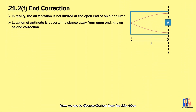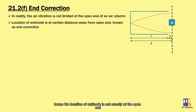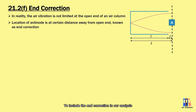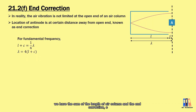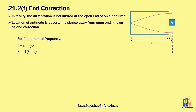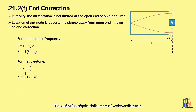Now let's discuss the end correction. In reality, the air vibration is not limited exactly at the end of an air column. The air near the open end is also vibrating, so the location of the antinode is not exactly at the open end but at a certain distance away from it. This extra distance is labeled as the end correction. To include the end correction in our analysis, we make a small adjustment at the first step: we add the end correction to the length of the air column. For example, for the fundamental frequency in the closed-end air column, the sum of the length L and the end correction c equals one quarter of the wavelength. For the first overtone, that sum equals three-quarters of the wavelength, and so on.